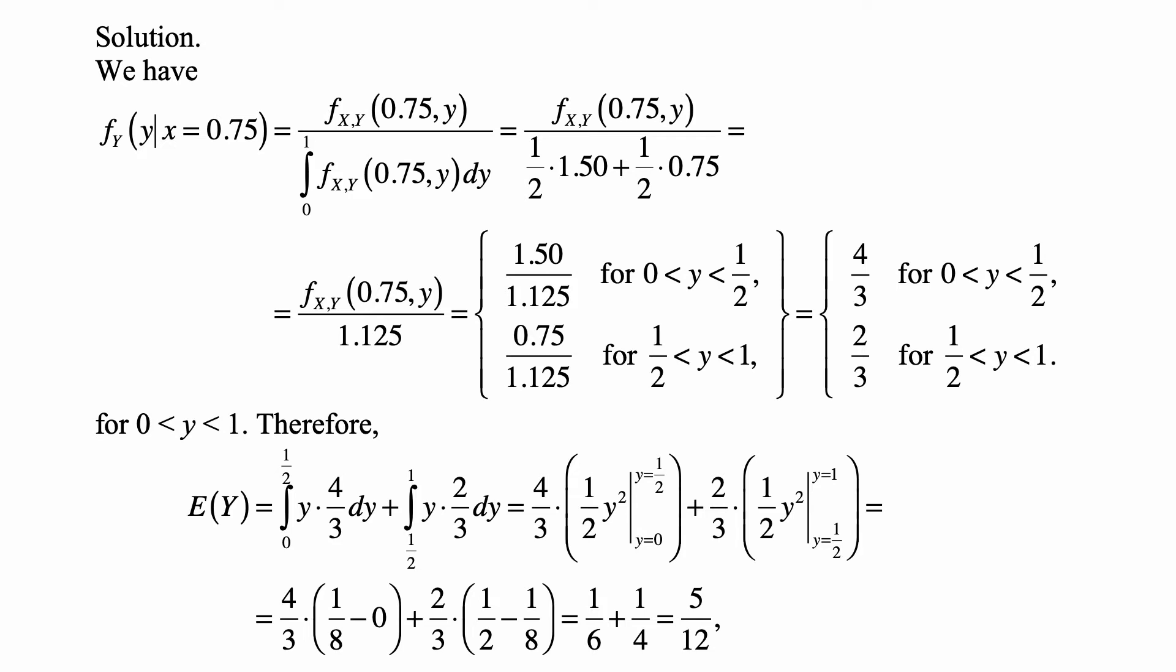Which is the integral from 0 to 1 of all values of the joint density corresponding to x equal to 0.75. And that's equal to f_XY(0.75,y) divided by 1/2 times 1.50 plus 1/2 times 0.75. And then that's equal to f_XY(0.75,y) over 1.125.